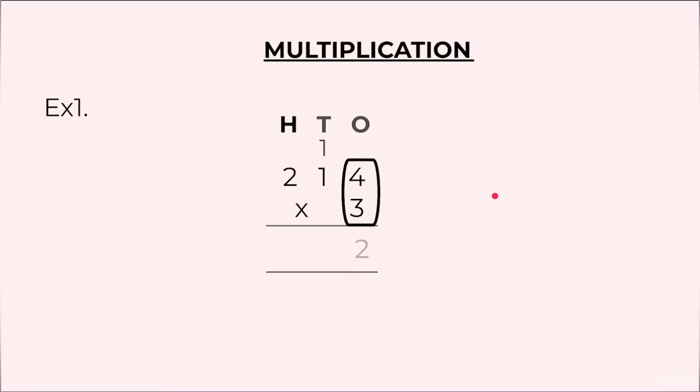After that we will multiply 3 into 1, that is 3. And then we will add this 1 of the carry that gives us 4. Now we will multiply 3 by 2. 3 twos are 6. So the final answer becomes 642.